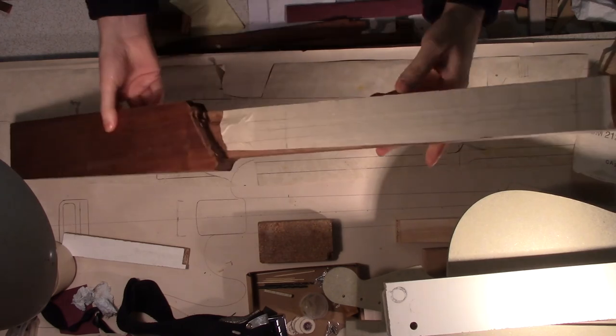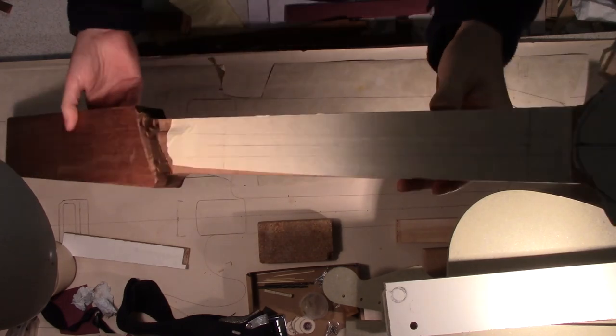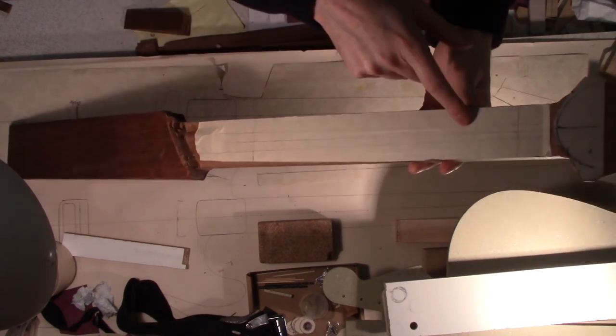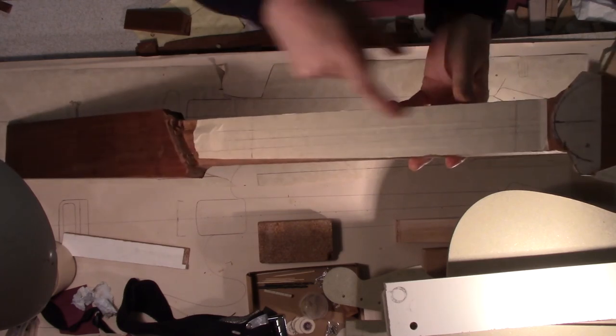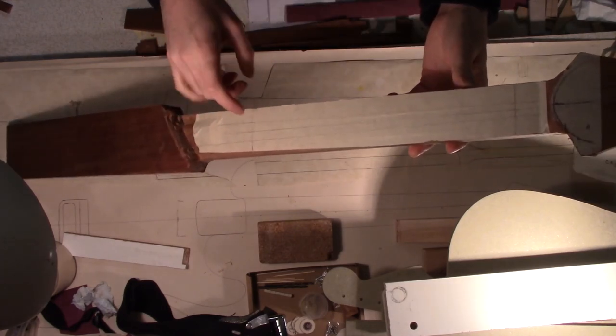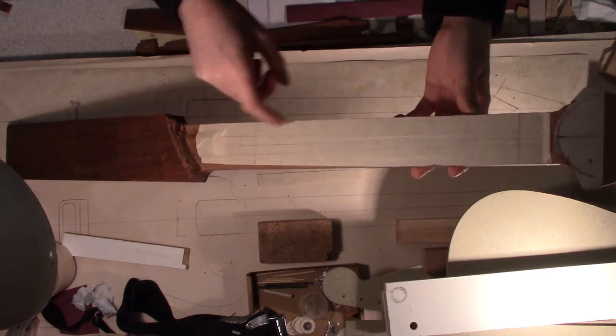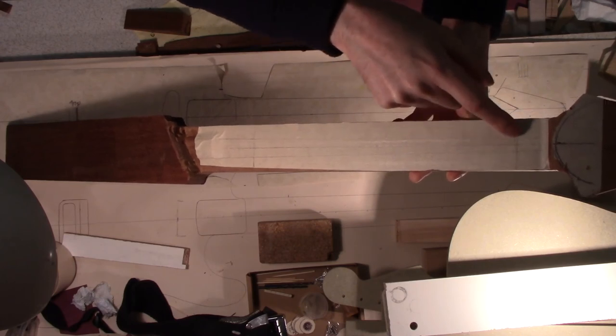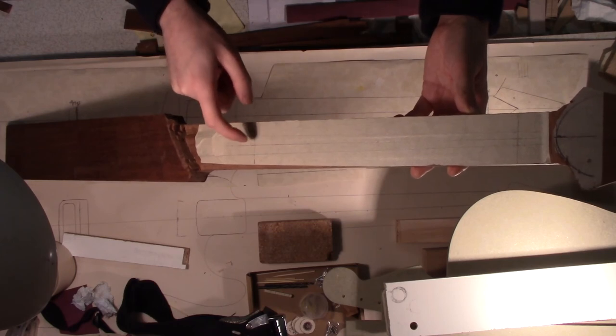So the next thing to do now is shape the back of the neck. I'm going to use the faceting technique, which is quite a common way to do it. So you have your center line down the middle, and you mark the first fret and you mark the twelfth fret. You do 5mm either side of the center line at the first fret, and 10mm either side of the center line at the twelfth fret.